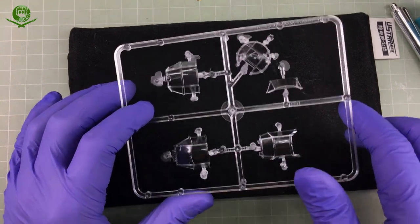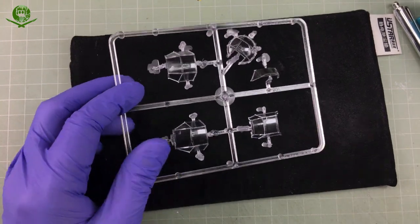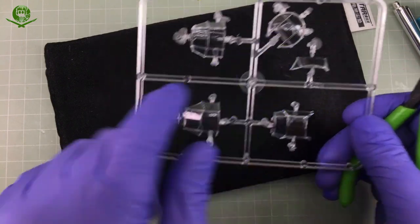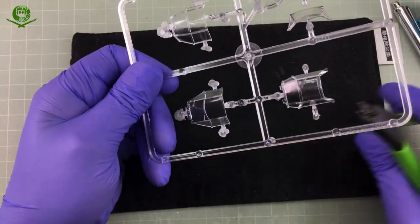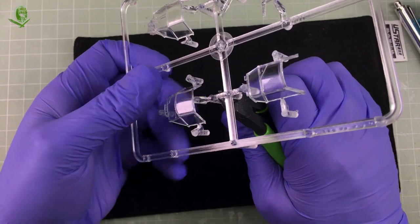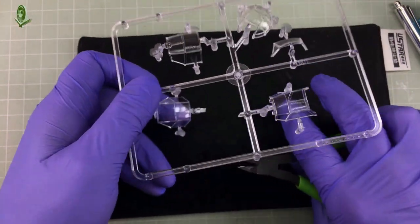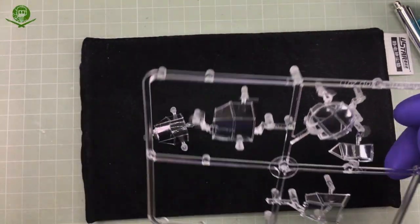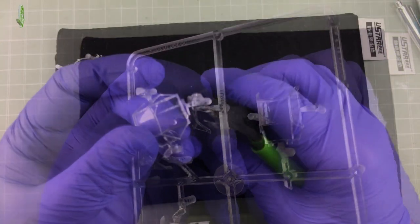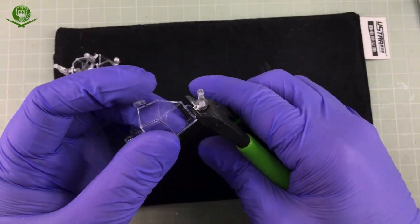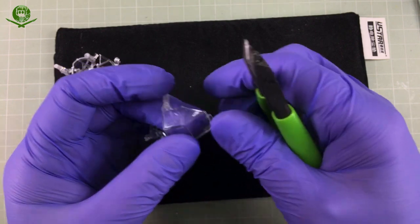The first trick is getting these off the sprue. You have to be a little careful here as the acrylic can be quite brittle. The best way is to snip the parts off with a nice dot of sprue still attached. Then you can carefully cut this excess back with finer, more delicate cutters.